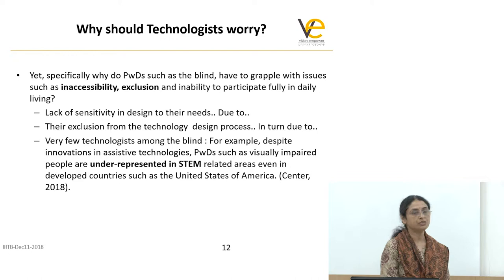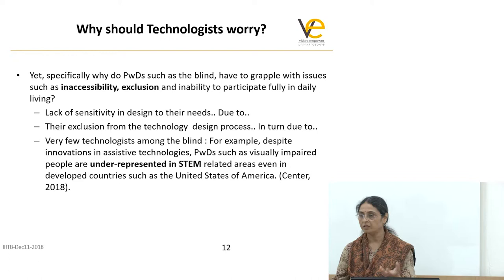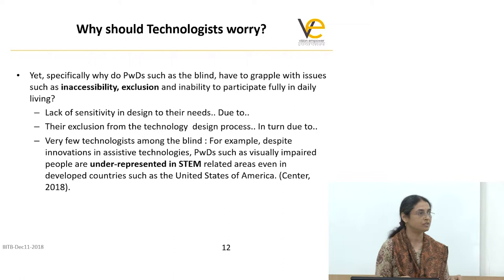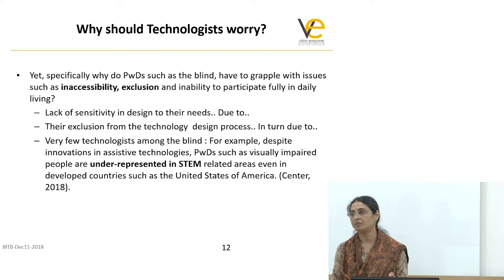This lack of design sensitivity is due to the exclusion of the visually impaired from the design process. When creating assistive technologies, inputs are not being taken from that community because they are a minority and not seen as users — as Jajit mentioned in the morning about the visibility of this community. They're not visible, you don't see them as users, and they themselves are not part of the design process.